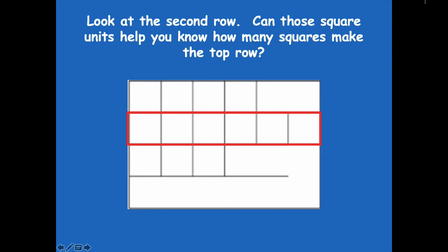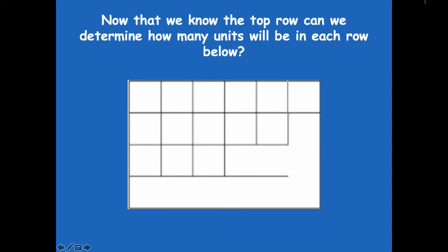Yeah, because all of those are filled in, right? So because those are all filled in, I know that the top row has to be exactly the same, so I can just draw in that one extra line. Now that we know the top row, can we determine how many units will be in each row? Yeah, we sure can because we can look right here.